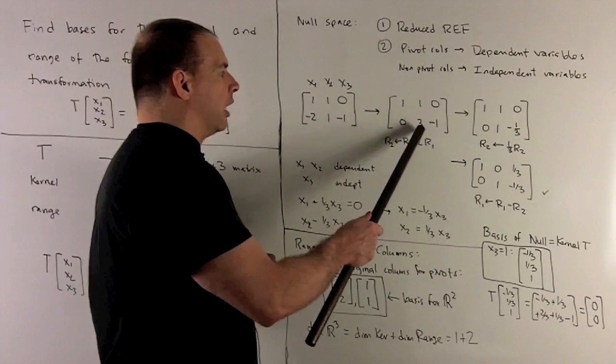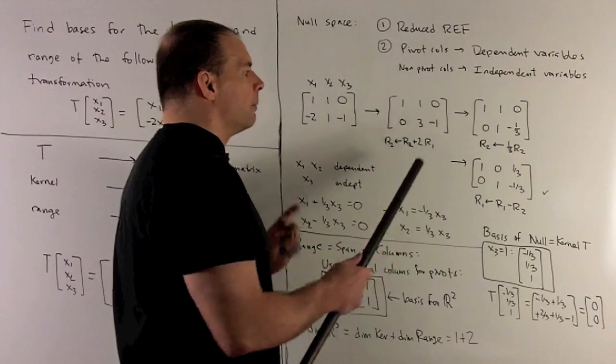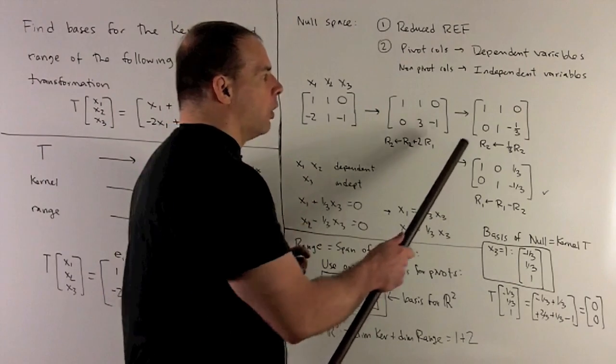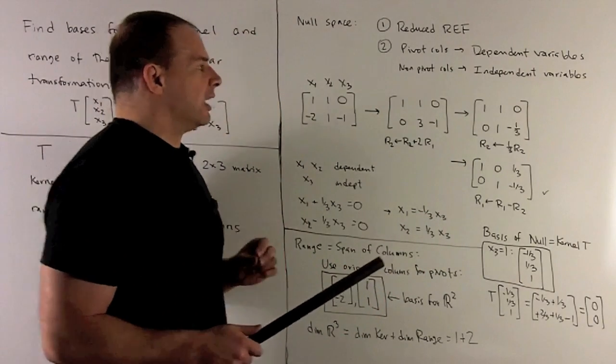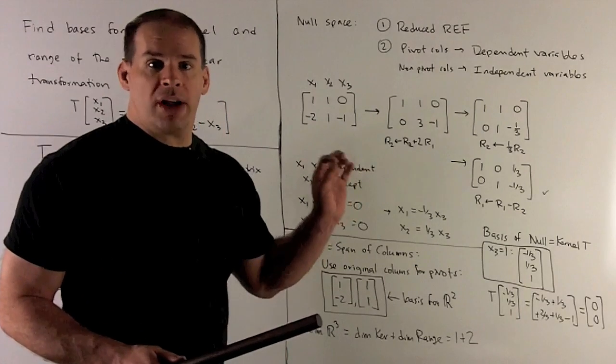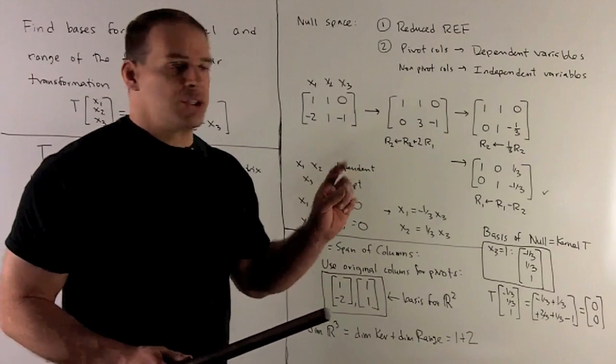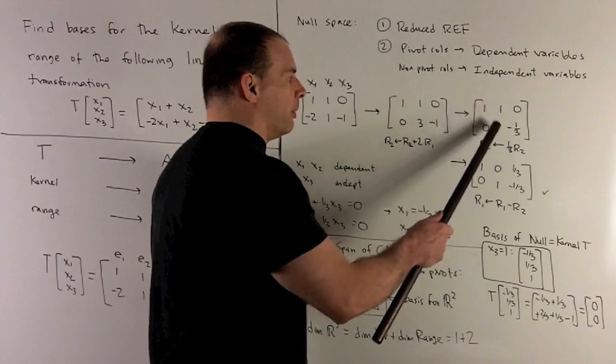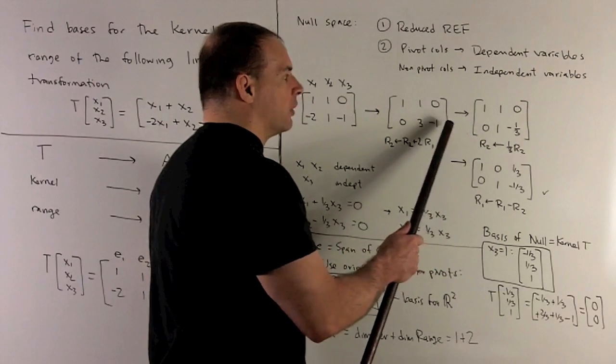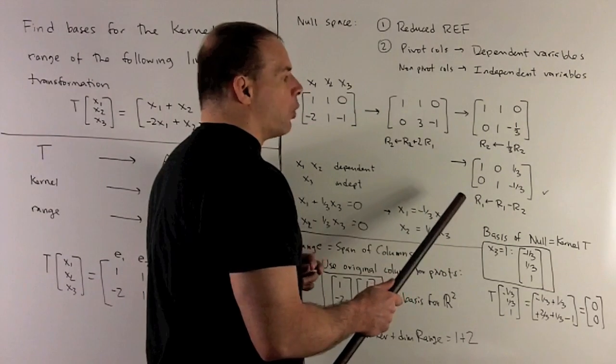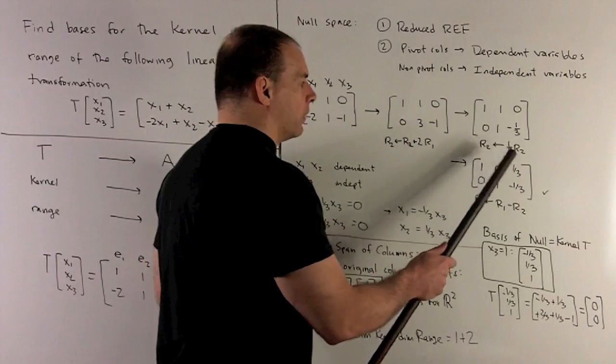Then I want to put a 1 here. So we're going to divide row 2 by 3, which gives me the row 0, 1, minus 1/3. And then finally, in row echelon form, we want reduced. I have to get rid of the 1 above this pivot. So I'm just going to take row 1, subtract off row 2. So then row 1 becomes 1, 0, 1/3.